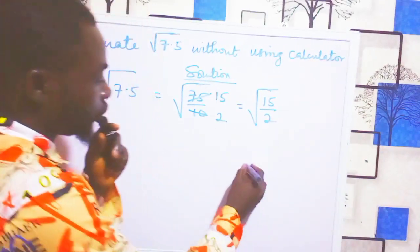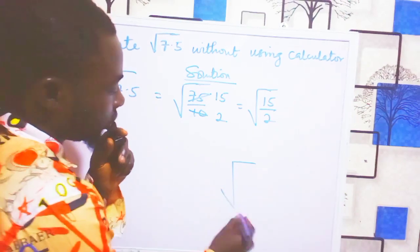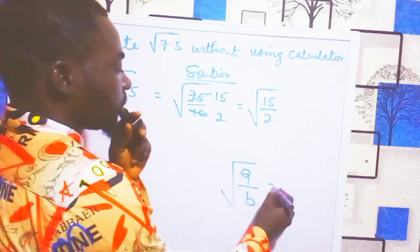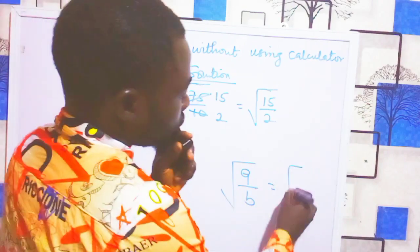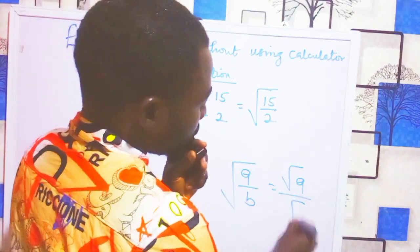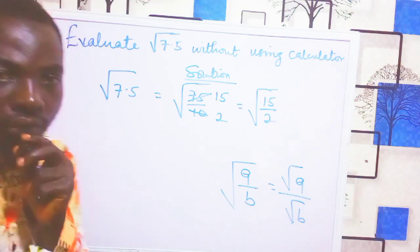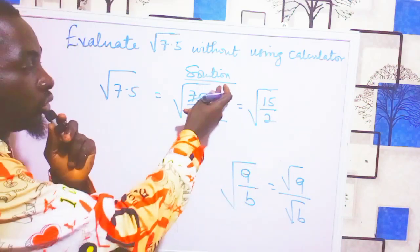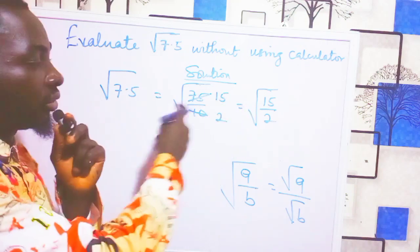We're going to use this law: if you have square root of A over B, this splits into root A over root B. So square root of 75 over 10 becomes square root of 75 over square root of 10.